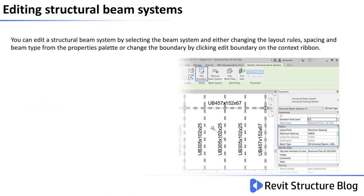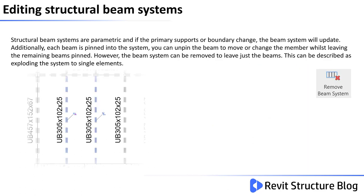You can edit a structural beam system by selecting it and either changing the layout rules, spacing, and beam type from the properties palette, or changing the boundary by clicking Edit Boundary on the context ribbon. Structural beam systems are parametric, and if the primary supports or boundary change, the beam system will update. Additionally, each beam is pinned into the system, and you can unpin individual beams to move or change a member whilst leaving the remaining beams pinned.